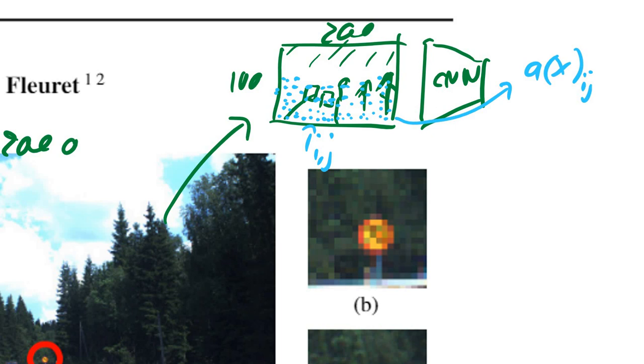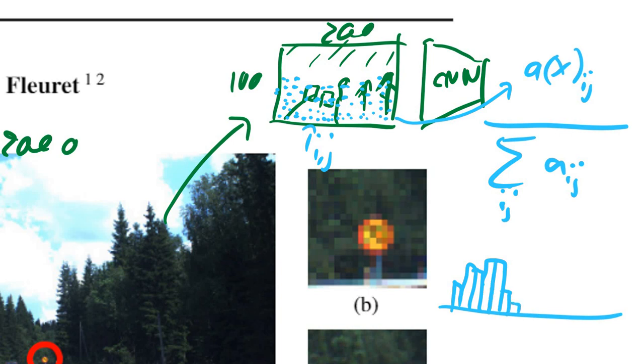If you normalize correctly, so if you normalize over all the a's, this gives you a distribution over this image. If we look at it in one dimension, this gives you like a distribution, not a continuous one, in this case a discrete one, of how interesting is each patch.